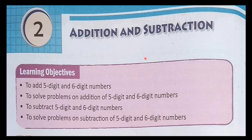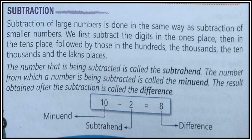Hello everyone, we are reading Chapter 2, that is Addition and Subtraction. In the last class we discussed about addition, and today we will discuss about subtraction — what is subtraction of five-digit and six-digit numbers. Subtraction of large numbers is done in the same way as subtraction of smaller numbers. We first subtract the digits in the ones place, then tens, then hundreds, and then thousands.